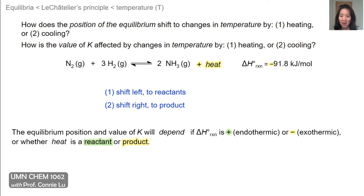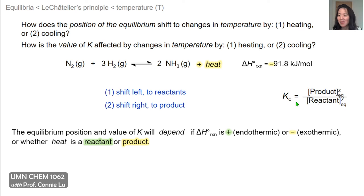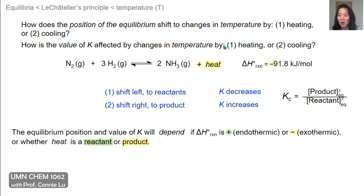We also want to know how the value of K is affected by changes in temperature upon heating and cooling. K is a ratio of products over reactants. Heating shifts the equilibrium toward reactants, so the denominator in the Kc expression gets larger and the Kc value goes down. The opposite is true for cooling: upon cooling the equilibrium shifts toward products, the numerator in the Kc expression increases, and so K increases. You can first figure out where the equilibrium position shifts and then determine what that means for the value of K.